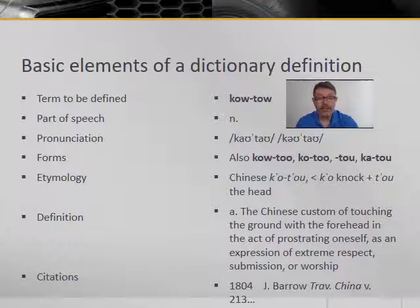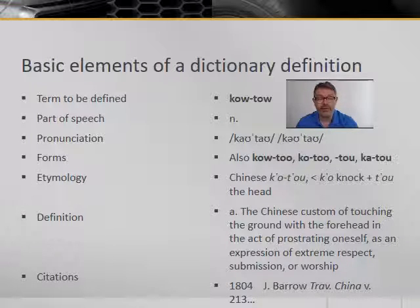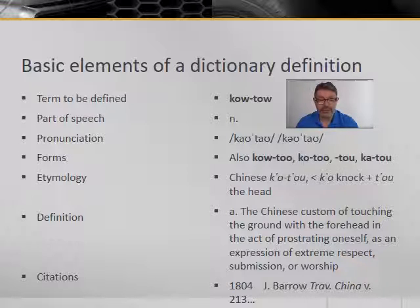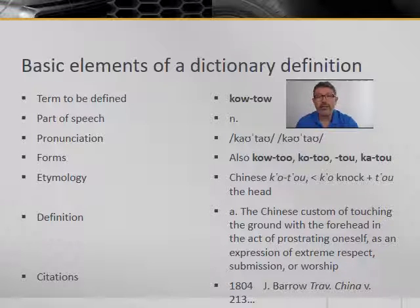The organization of a typical OED entry includes quite a lot of information. It includes the term you want to define — here, koutou — its part of speech (it's a noun), its pronunciation, variant spellings if any, its etymology or original meaning (which means 'a knock on a head' in Chinese), a definition for every sense of the word, and a list of citations that both give evidence for this sense and illustrate its use.